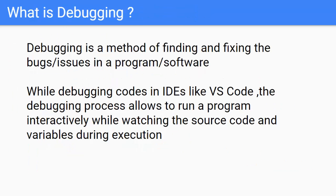What is debugging? Debugging is a method of finding and fixing the bugs or issues in a software or program. While debugging code in IDEs like VS Code, the debugging process allows you to run a program interactively while watching the source code and the variables during execution. In that way, if there is a problem in the code we can identify and fix it.